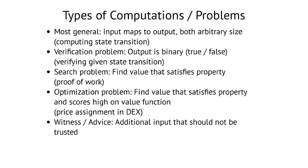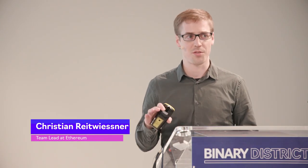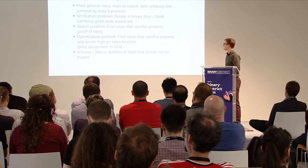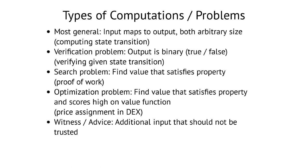Then there are search problems, where you have a certain input and you're tasked to find a value that satisfies a property. Proof of work is an example: your input is a block without the nonce field filled in, and your task is to find a nonce so that the hash of the block is below a certain threshold. These are usually solved using brute force — you try out all possible inputs until you find something that works, though for some problems better solutions exist. Whether or not a candidate satisfies the property is again a verification problem.